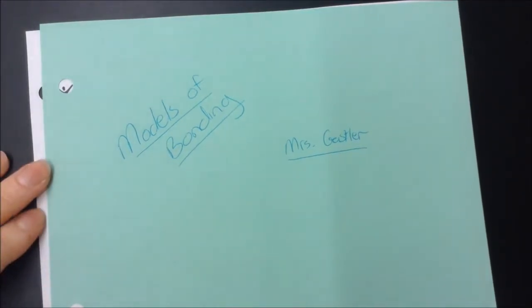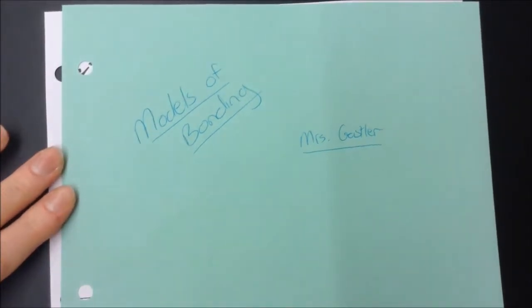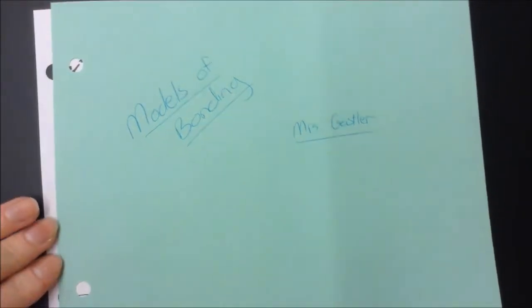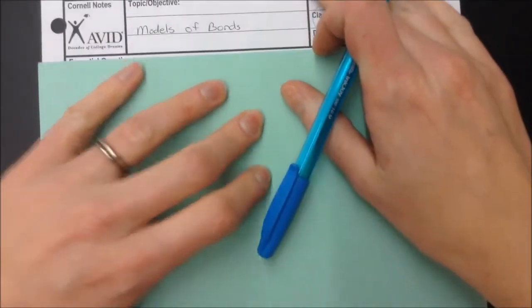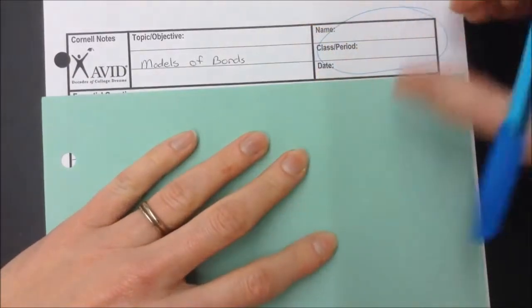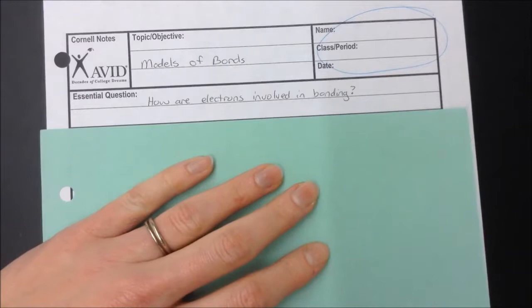You're going to need some Cornell paper and we're going to be drawing electron dot structures. If you need a refresher, we did that in objective 7 of unit 5, otherwise we'll be talking about it here. We're going to fill this out: name, date, and class period. Our topic is models of bonds. We have one essential question that we're going to answer in a variety of ways: How are electrons involved in bonding?